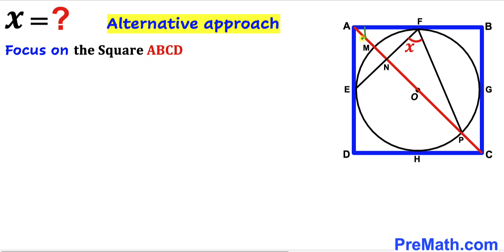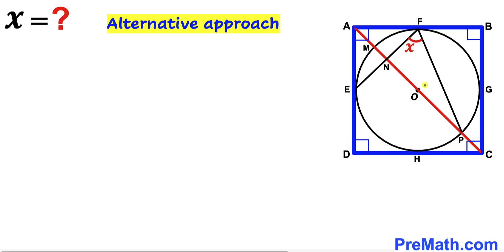All interior angles of square ABCD are 90 degrees. Next, I'm going to connect center O with point F. We can see that OP is a radius of the circle, and likewise OF is also a radius of the same circle, so radius OF equals radius OP.